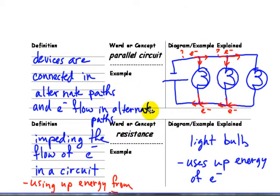Parallel circuit. Devices are connected in alternate paths. And electrons flow in alternate paths. And we could have one branch that's broken and the other ones will still work. So this one has three different branches.